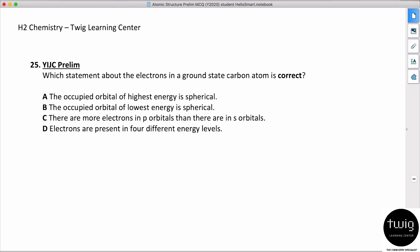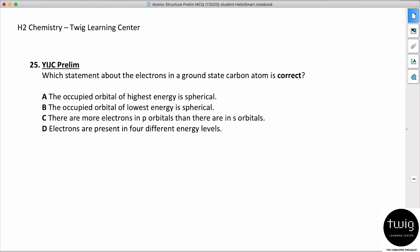Which statement about electrons in a ground state of carbon is correct? So for carbon, it's supposed to have a configuration of 1s² 2s² 2p², since there are six electrons.